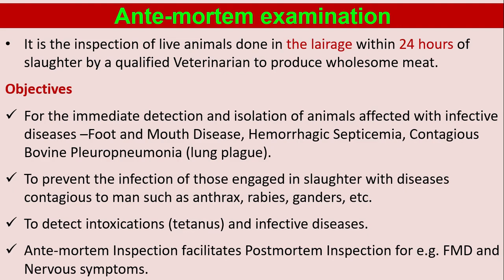Another objective is to prevent the infection of those engaged in slaughter with diseases contagious to humans, such as anthrax, rabies, and glanders. It is also used to detect intoxications like tetanus and other infectious diseases. Anti-mortem inspection facilities include adequate post-mortem inspection arrangements, for example for FMD and nervous system conditions.